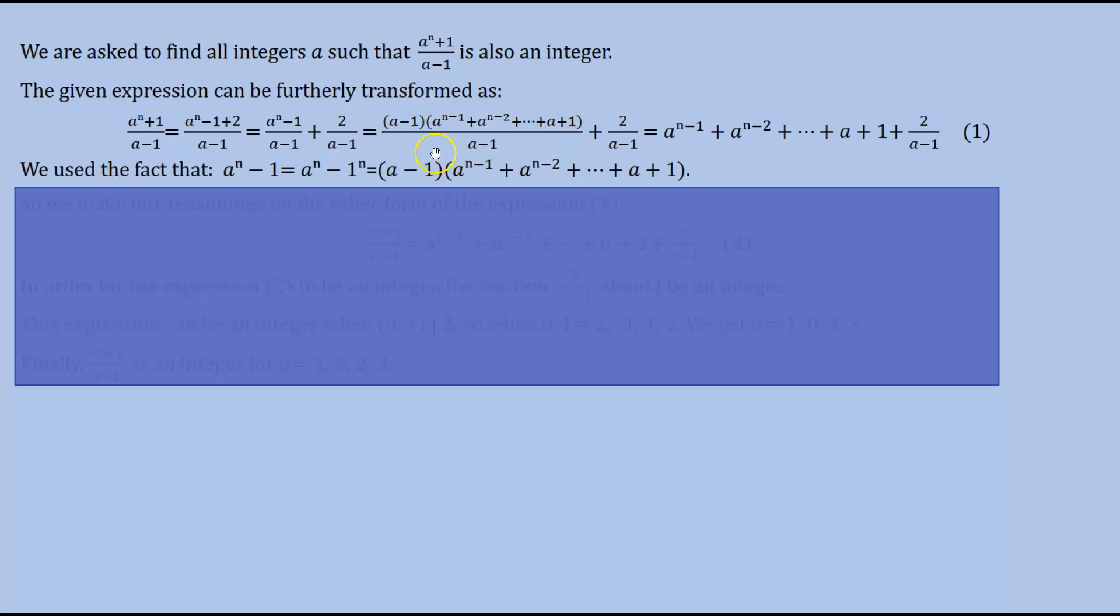On this first term we simplify (a-1) and we get that this is equal to (a^(n-1) + a^(n-2) + ... + a + 1) + 2/(a-1).